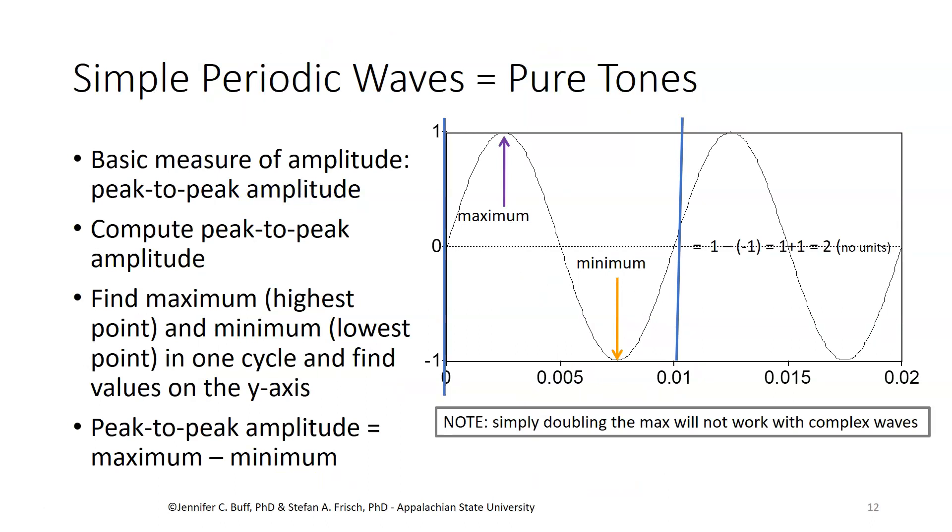We can make a very simple measure of amplitude off of a simple periodic wave by looking at the distance from, it's called peak to peak amplitude, but it's really peak to trough, the highest point to the lowest point. We can do the math with that by taking the maximum value that we find and subtracting off the minimum value that we find. The peak to peak amplitude is maximum minus minimum.